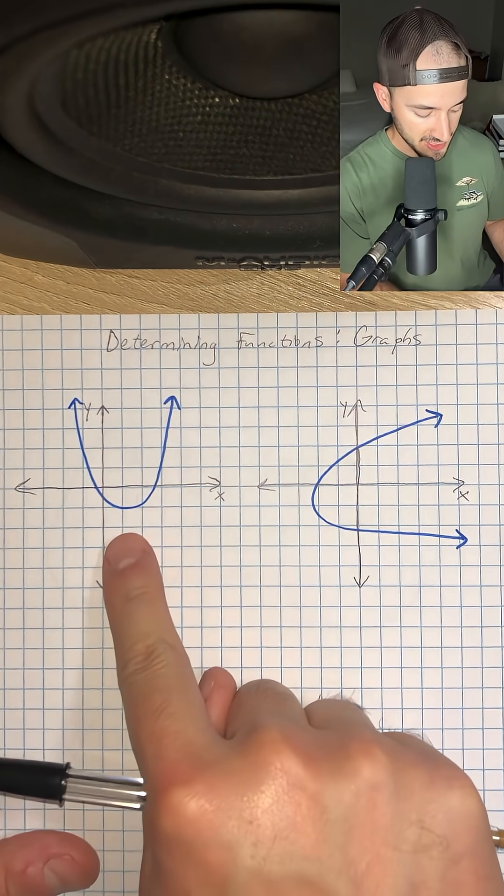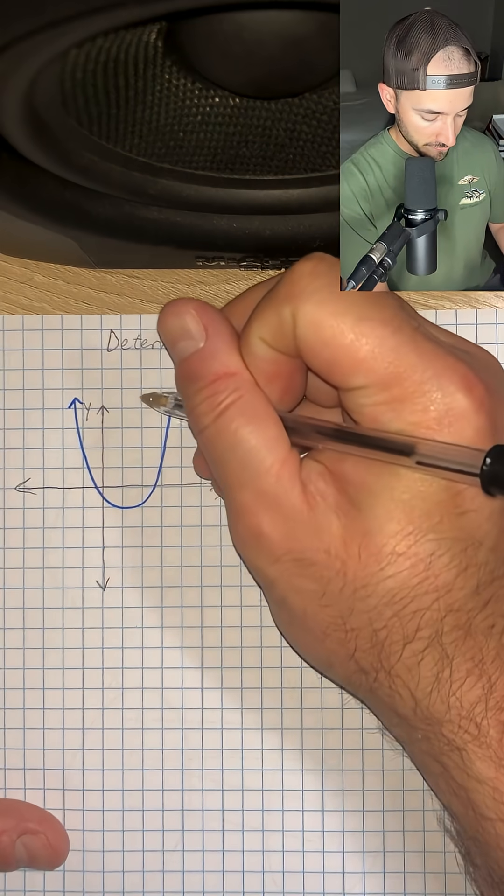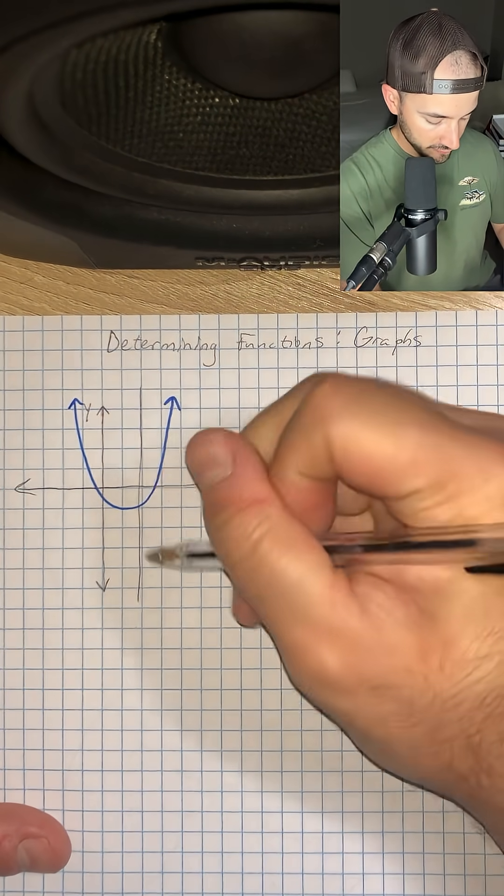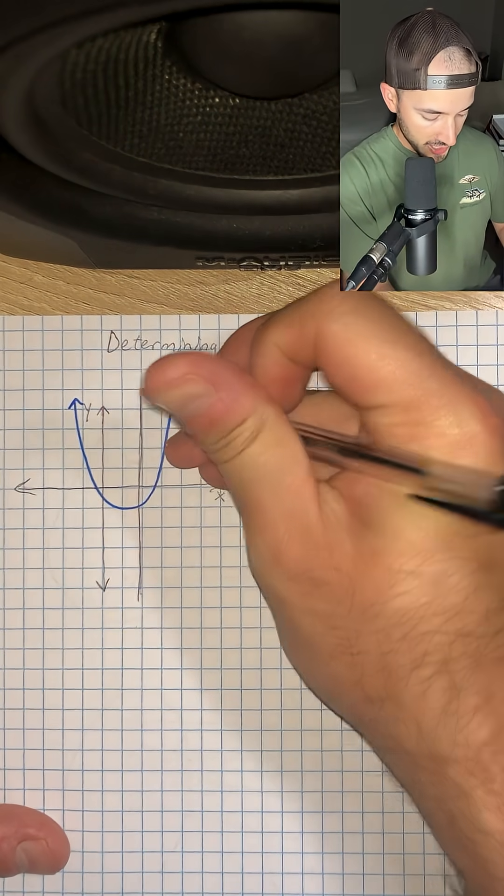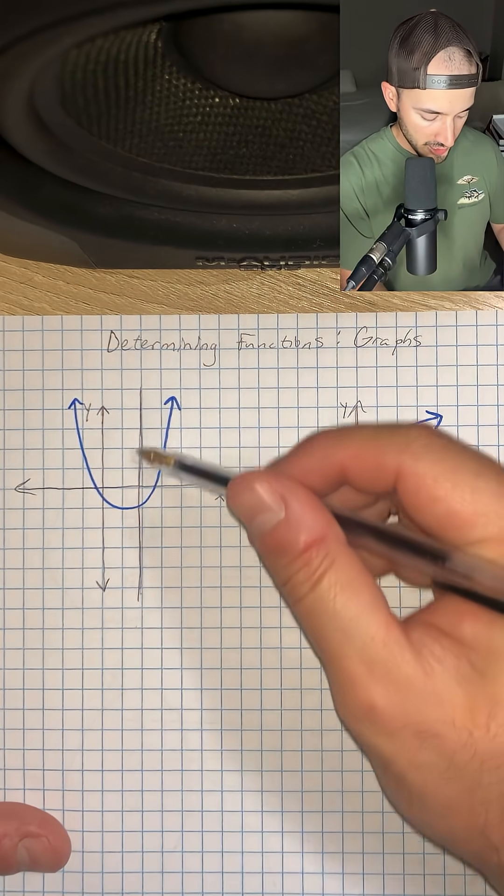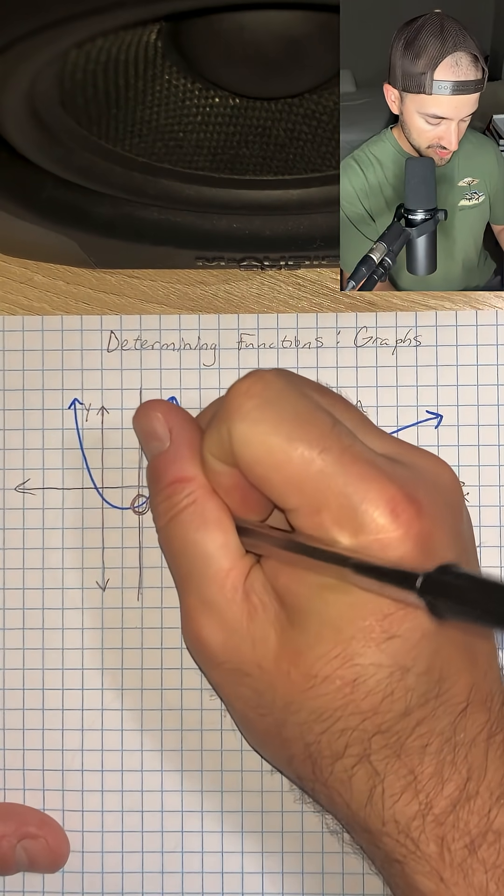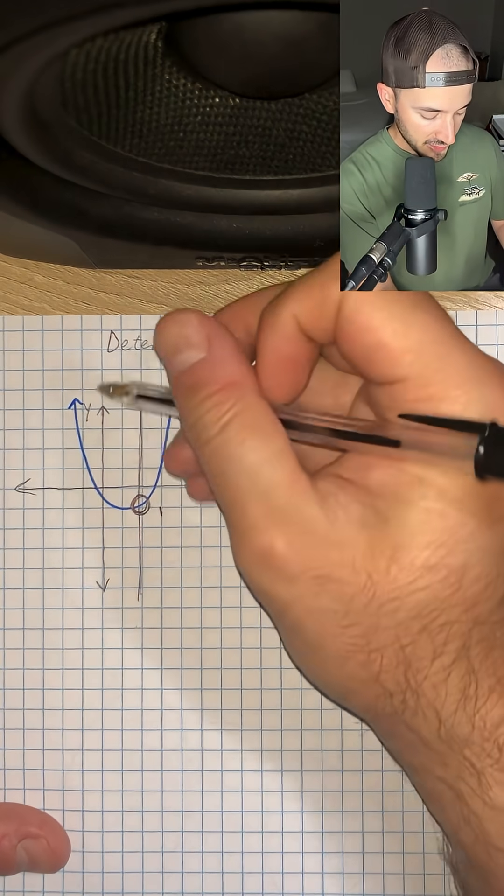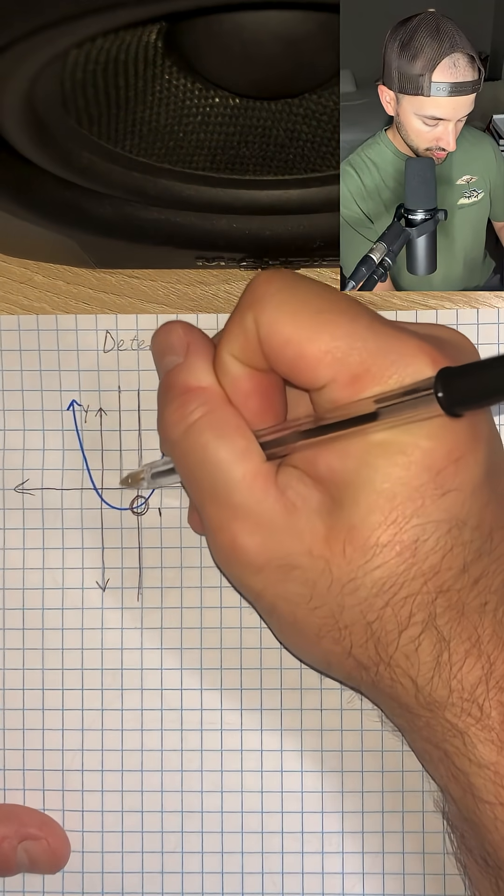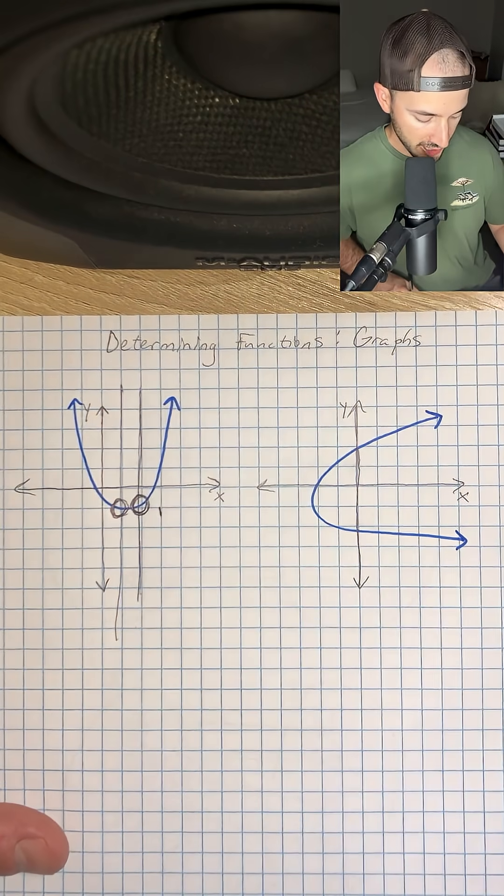Let's look at our first example. We have this blue parabola, and we're going to draw a vertical line right down through the graph. At any point on this line, if we draw a vertical line down through it, we should only cross through the blue line once. See how we only touch it once? If I do that anywhere, let's draw another line right next to it, going straight down, we only touch the blue line once.